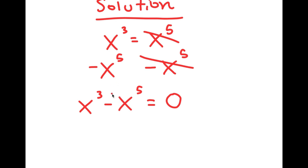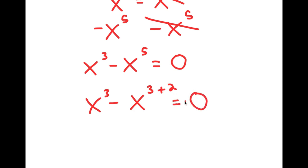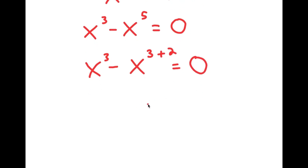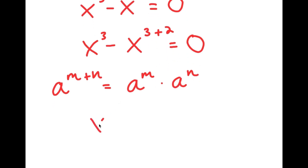From here, x to the power of 5 is the same thing as x to the power of 3 plus 2. An important property of exponents is that if I have something in the form a to the power of m plus n, this is equal to a to the power of m times a to the power of n. So x to the power of 3 plus 2 is going to equal x to the power of 3 times x to the power of 2.